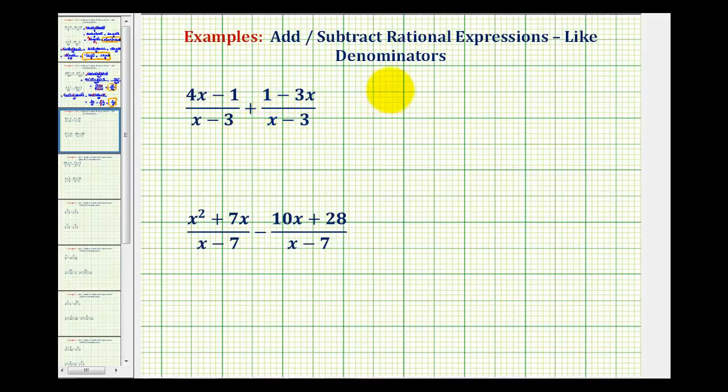To add or subtract rational expressions with like or same denominators, we keep the denominator the same and add or subtract the numerators.